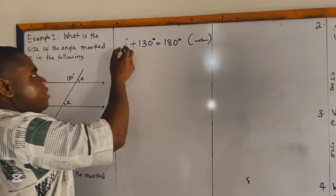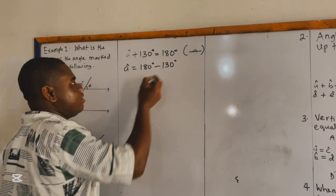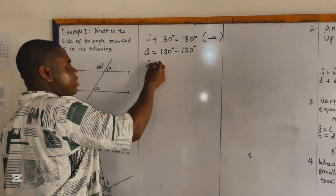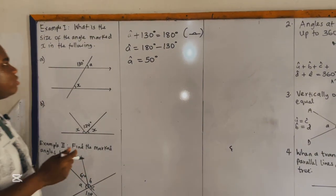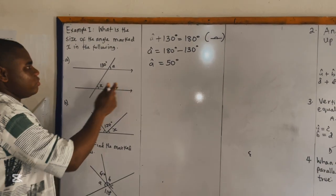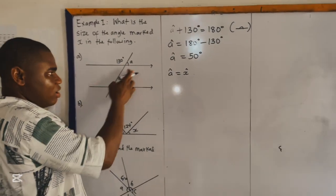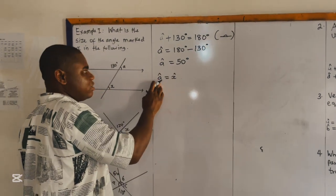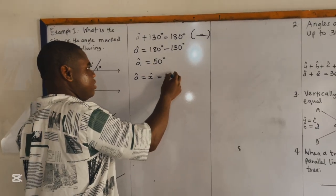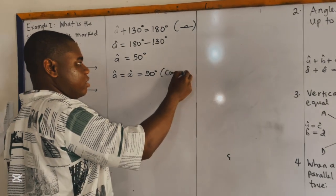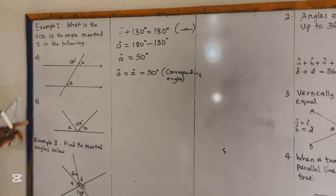We know that angle A plus 130 degrees is equal to 180 degrees, since angles on a straight line sum to 180 degrees. So angle A equals 180 degrees minus 130 degrees, which gives us 50 degrees. Now, angle A is equal to angle X because they are corresponding angles. Therefore, angle X equals 50 degrees.